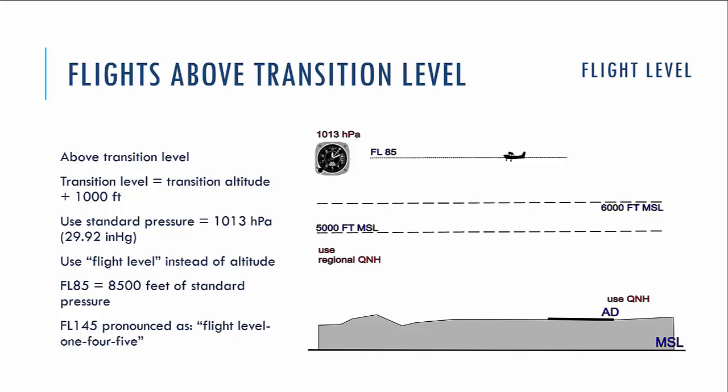We use flight level instead of altitude when flying above the transition level. We pronounce it as, for example, flight level 85 or flight level 145. The reason we use standard atmospheric pressure above the transition level is obvious: if we use different settings on the altimeter on different airplanes, it will not guarantee unique measurement of the vertical position of aircraft, and therefore the vertical separation between aircraft. If two airplanes use different pressure settings, they could fly at the same physical level but with different altitude indications, which brings a risk of collision between them.